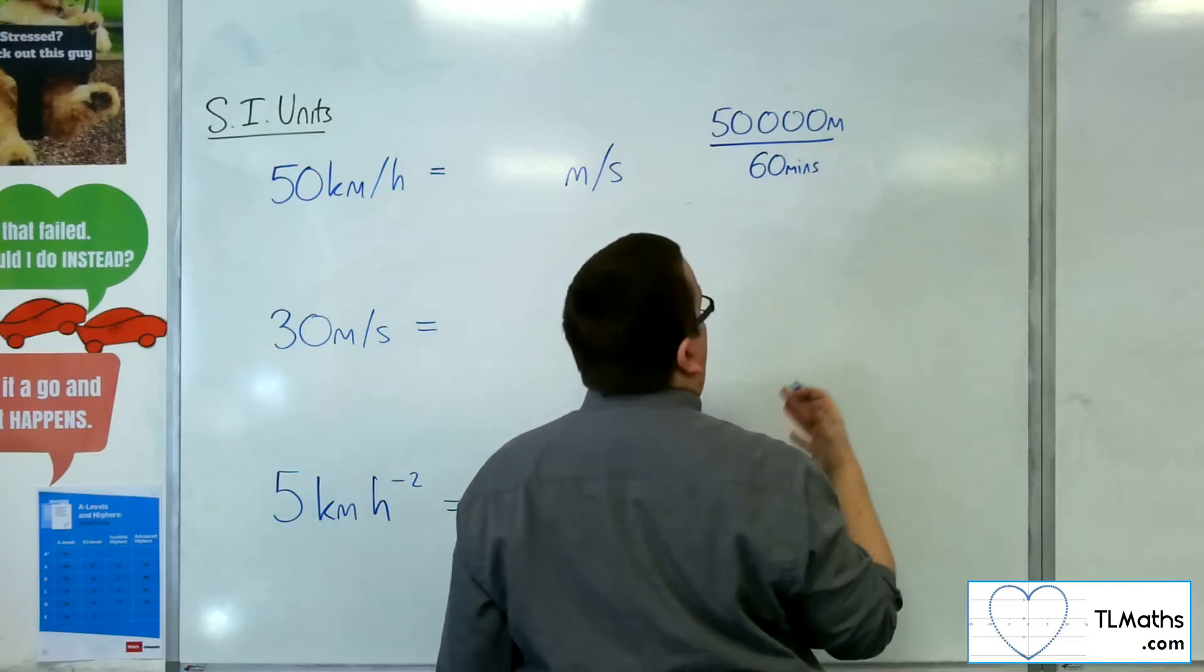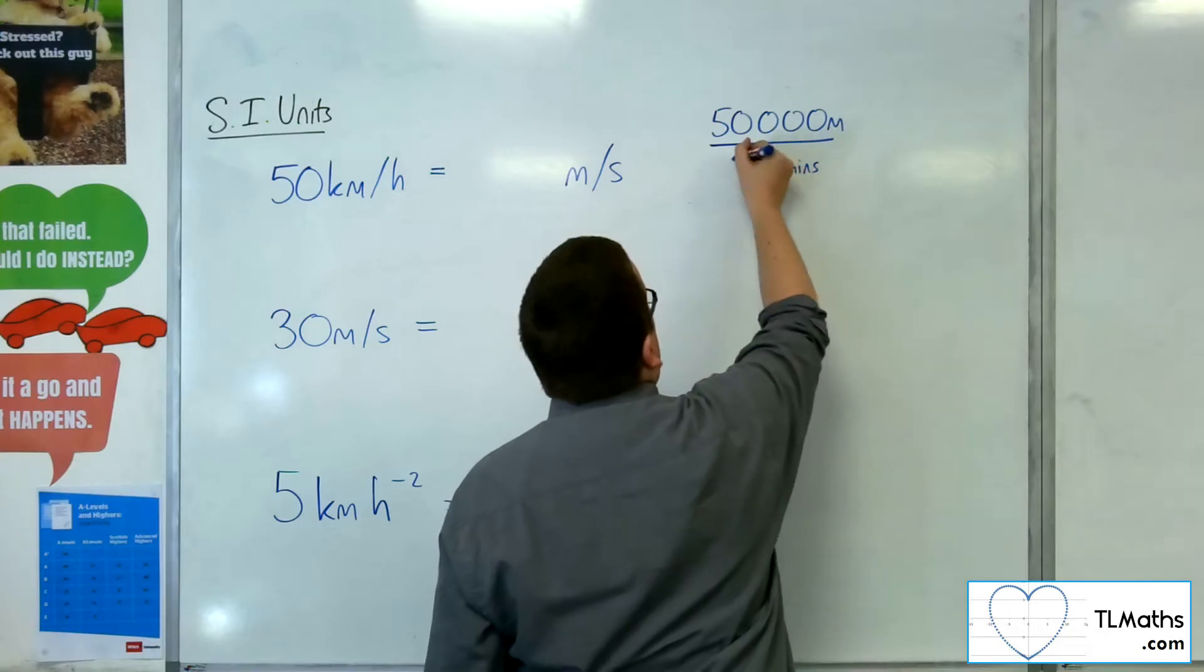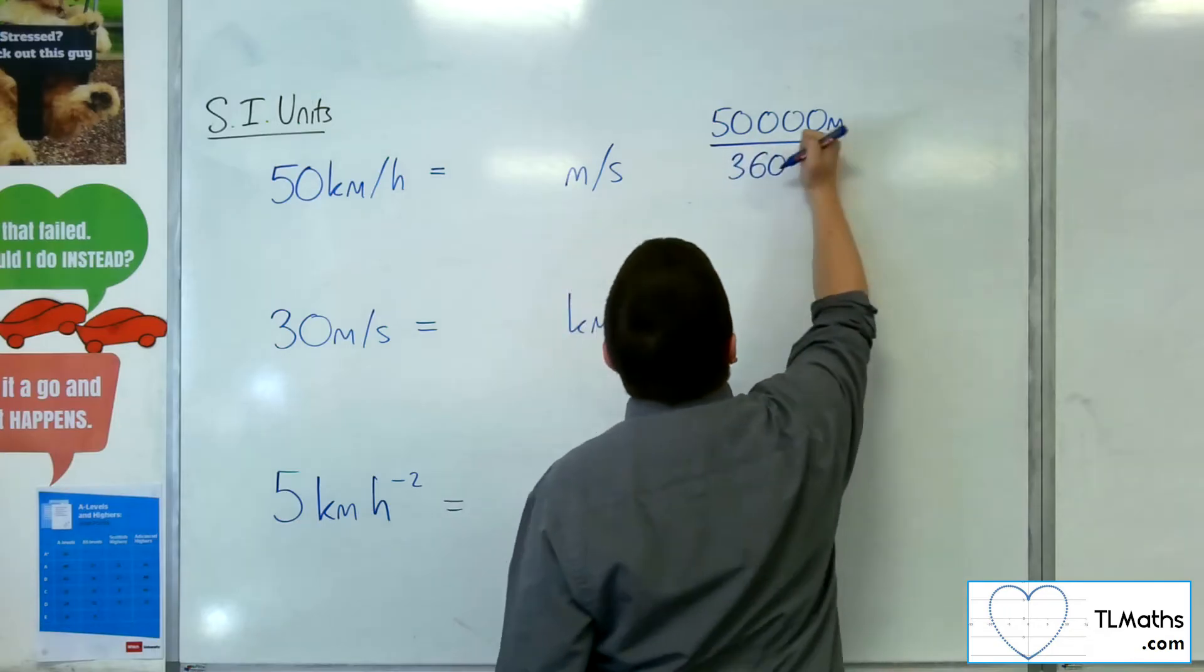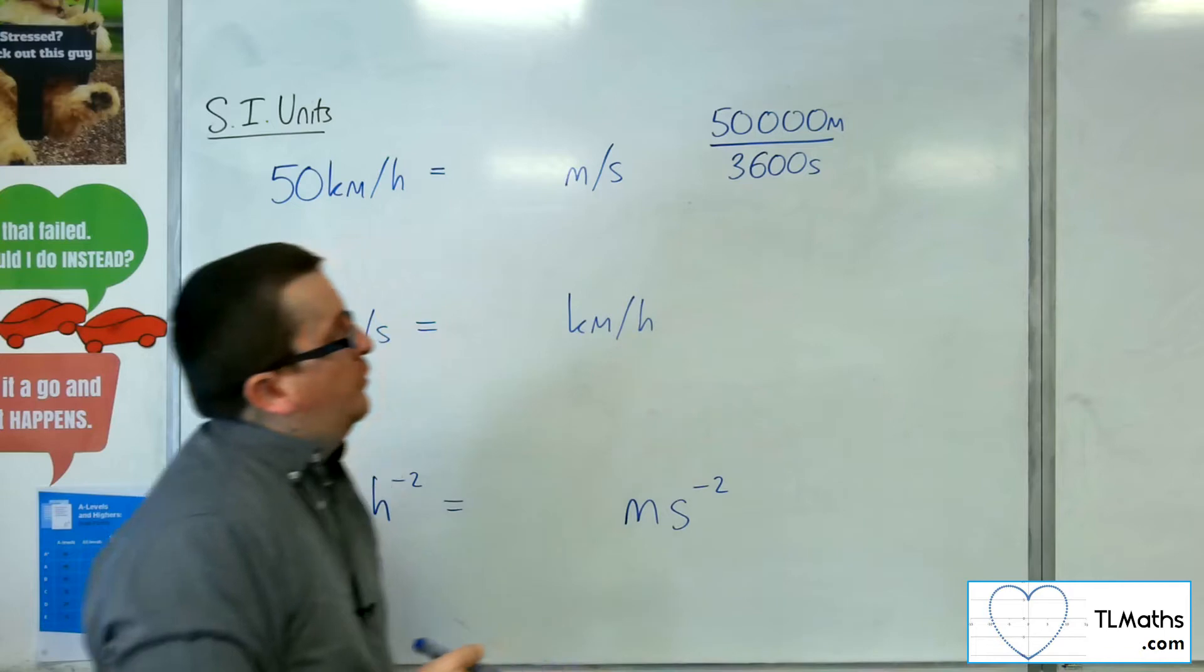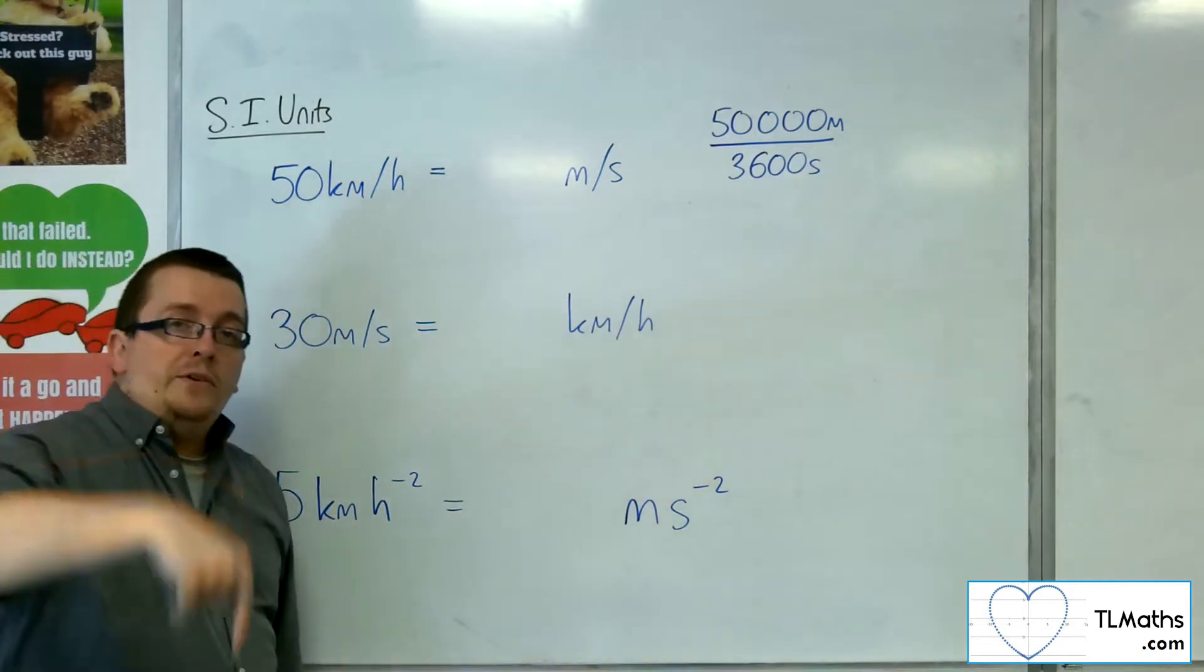So 1 hour is 60 minutes, and then 60 minutes is 3,600 seconds. So you're dividing by 60, then dividing by 60 again.